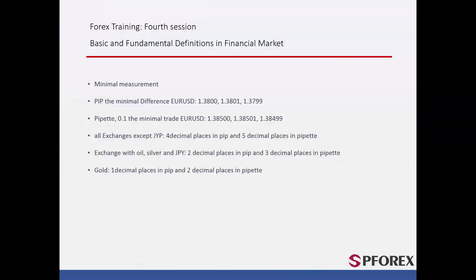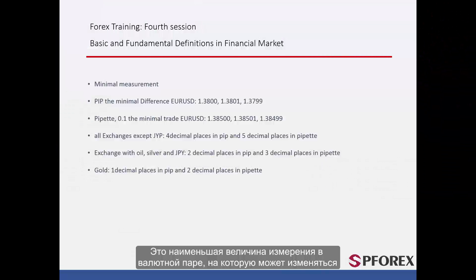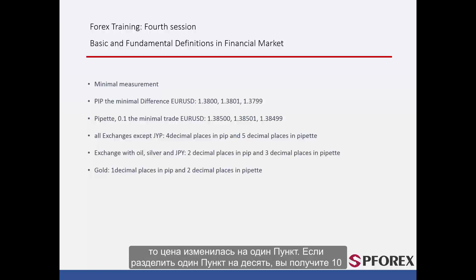Now it is time to talk about PIP. This is the smallest measurement of change in a currency pair. For instance, if the price of EUR against the US Dollar is 1.3800 and it rises to 1.3801 or falls to 1.3799, it changed by 1 PIP. If you divide 1 PIP by 10, you will have 10 pipettes, which will add one extra decimal digit to the currency pair value.